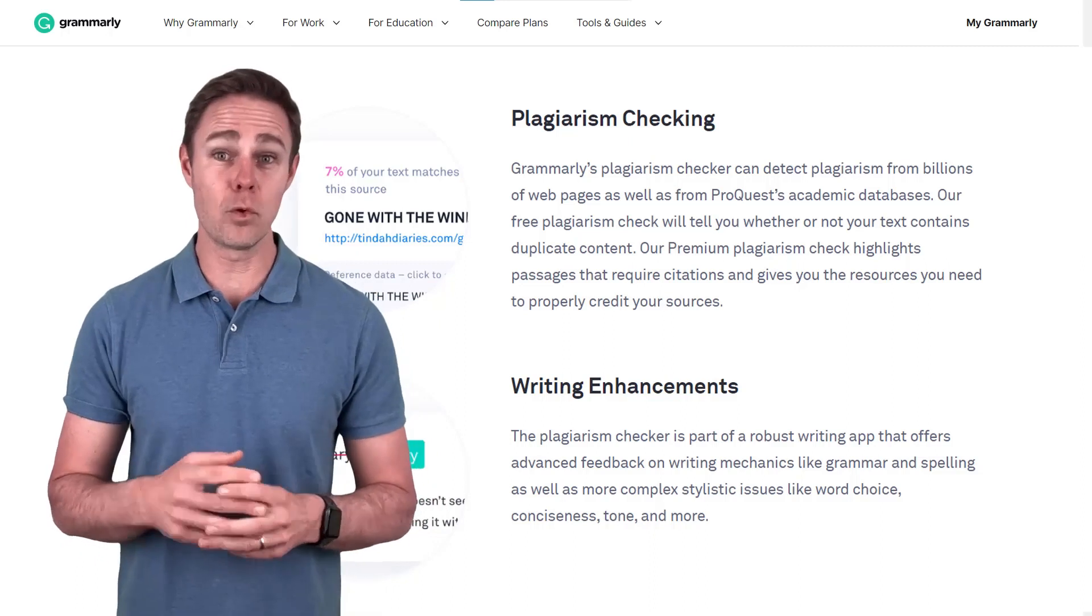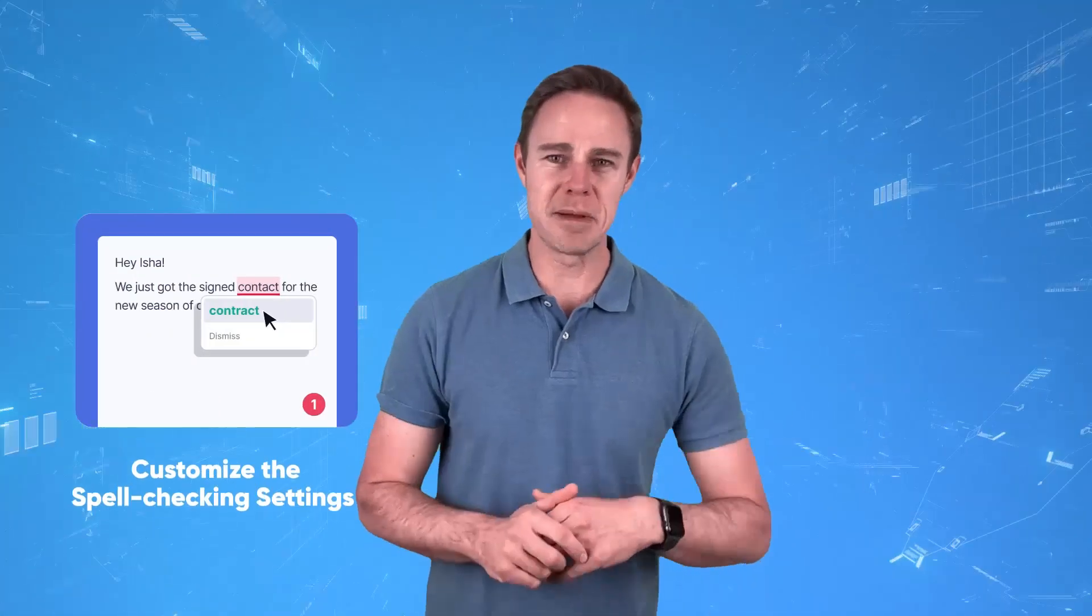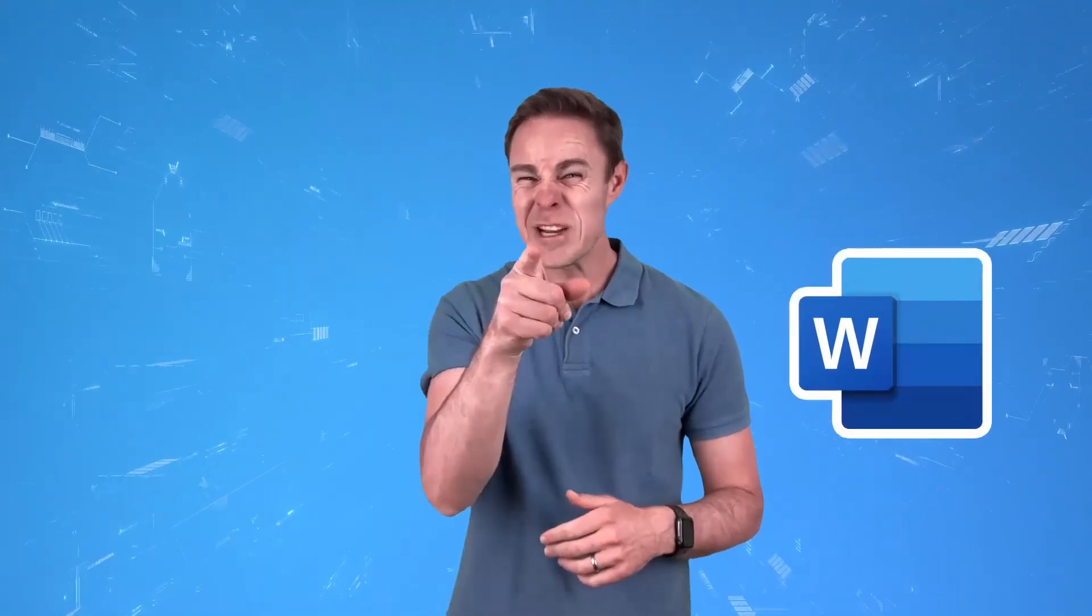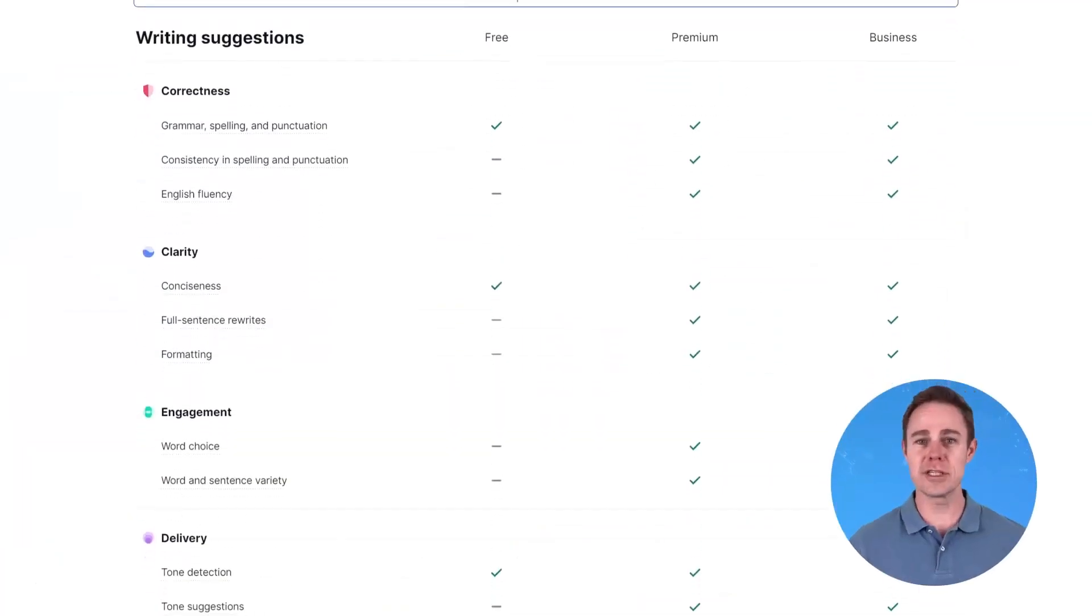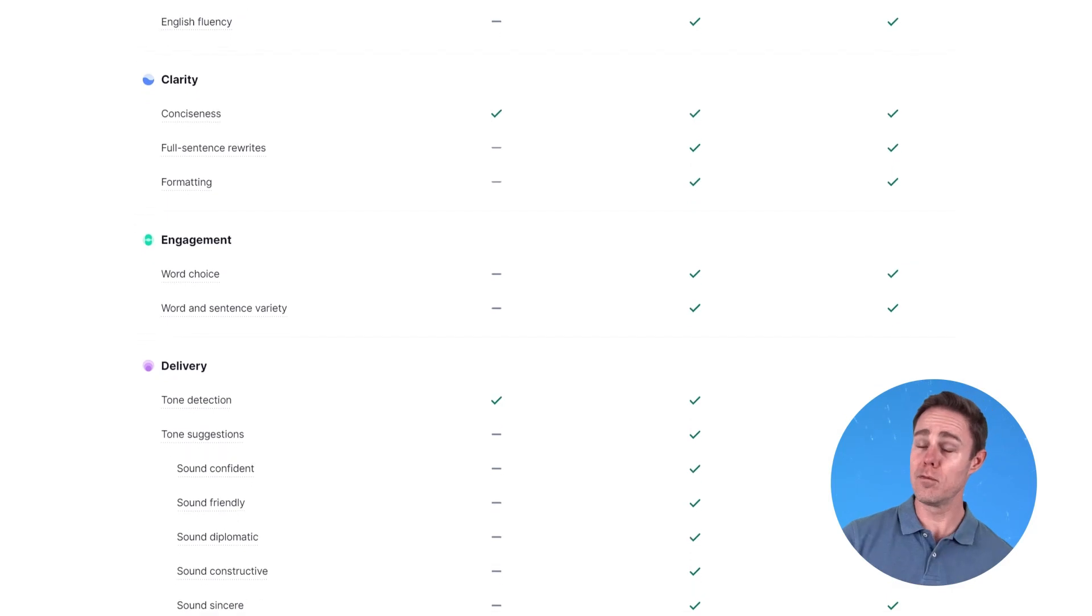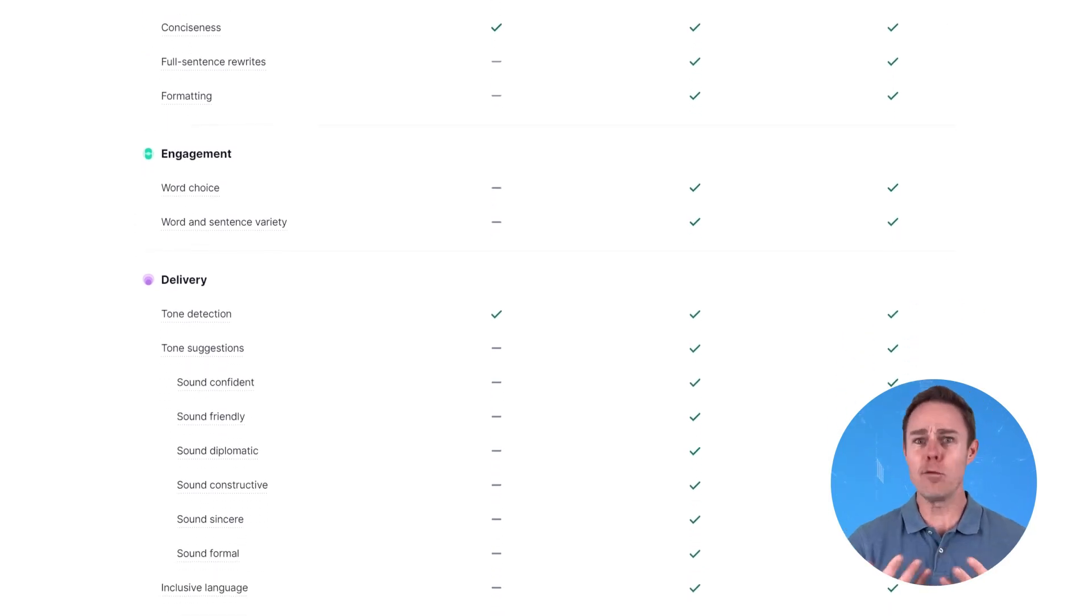Additionally, you can customize the spell-checking settings to match your preferences, meaning your documents won't be covered in those horrible squiggly blue lines. Looking at you, Microsoft Word. The premium version adds even more functionality with the inclusion of features that can tweak your word choice and tone of voice.